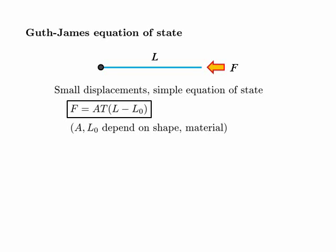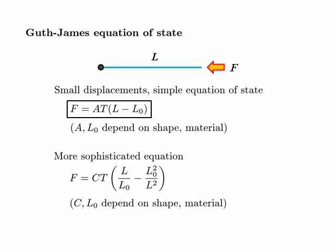This simple Guth-James equation is sort of the ideal gas law for rubber bands. There's also a more sophisticated version analogous to the van der Waals equation, involving a constant C and the same L0. An interesting challenge is to derive the first equation from the second in the appropriate approximation — it's an excellent exercise in linear approximation from calculus, and along the way you'll get a relationship between the constants A and C.